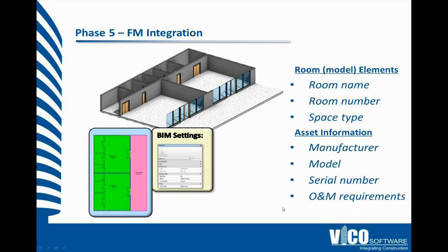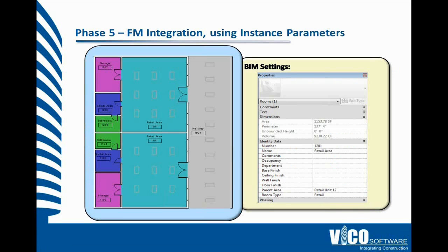You can simply click on any element that you need, find out the asset information, and what room it's in. Anyone relating to facilities maintenance has tremendous control. If you need to shut down one area of the building for a while, you can instantly get a list of all the equipment that's in there, making sure you have your electrical circuits isolated. Facilities maintenance teams love the solution we've come up with here.